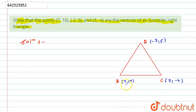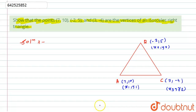Now let this point A be (x₁, y₁), B be (x₂, y₂), and C be (x₃, y₃). Here we have to prove that these given vertices form an isosceles triangle.